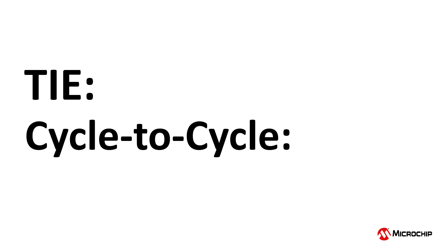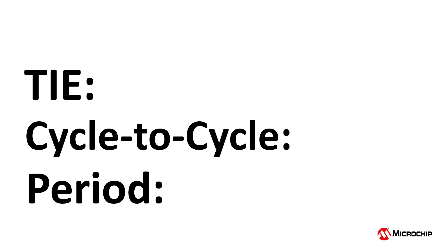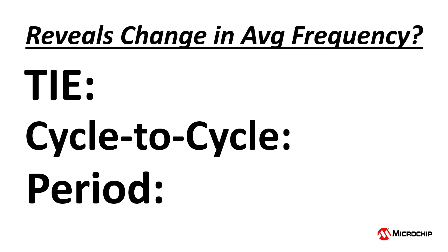Now let's do a quick review of TIE jitter versus cycle-to-cycle jitter and period jitter by asking ourselves this question: which type of jitter can reveal a change in the average clock frequency? TIE jitter?